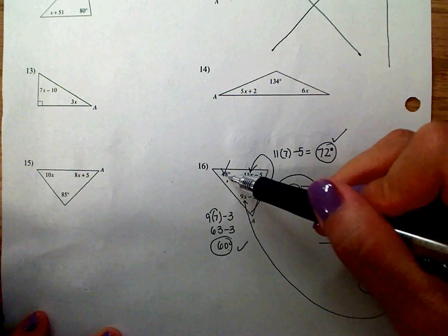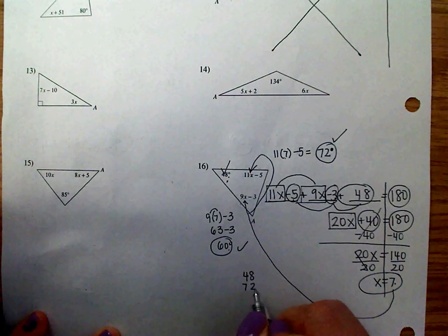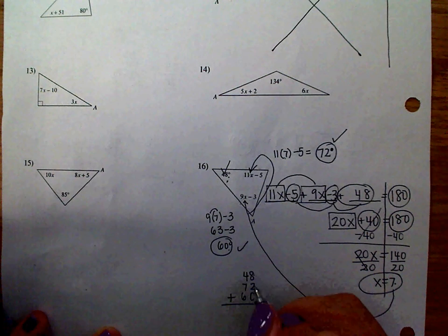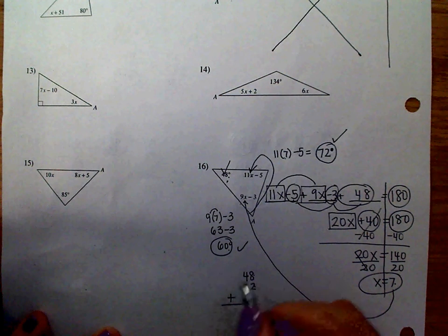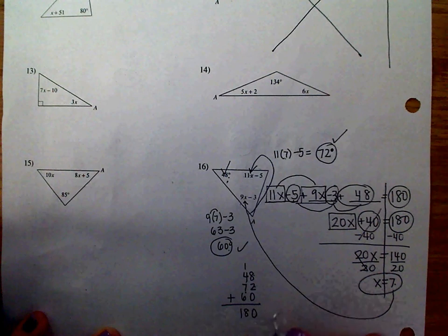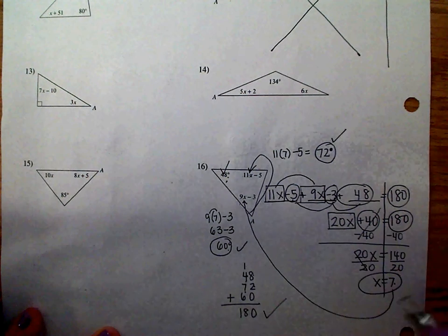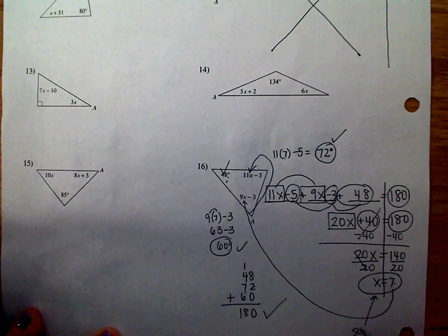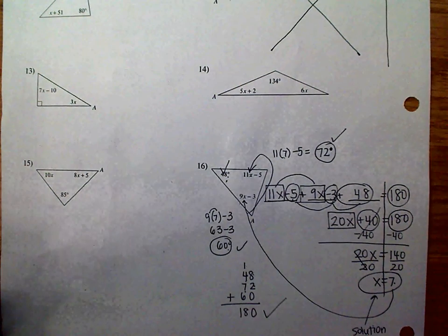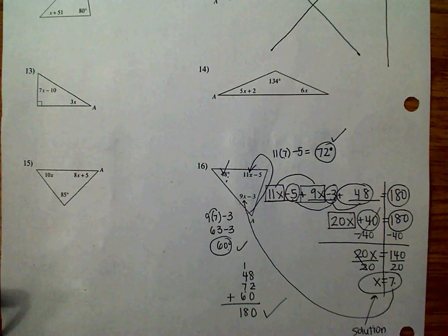So, 60 degree angle plus 72 degree angle plus 48 should be 180. Well, let's see if that's true. I'm just going to do this by hand. Those are the three angles. So, I add them up. 8 plus 2 is 10. Plus 0 is 10. Carry the 1. 5 plus 7 is 12. Plus 6 is... Hey, they do add up to be 180. So, going back, this is the solution. X has to equal 7 in order for the triangle to add up to be 180.